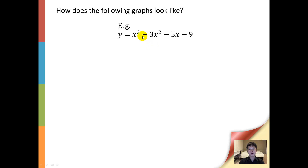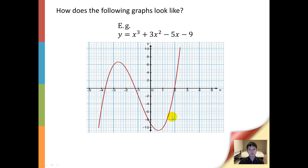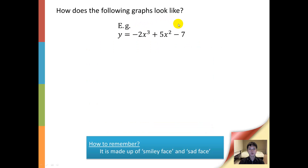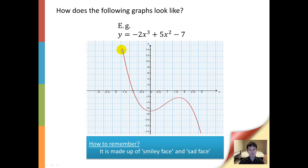Let's look at another type of cubic function — for example, y equals x cubed plus 3x squared minus 5x minus 9. After plotting, the curve will look like a sad face followed by a smiley face. For the next cubic curve with positive leading coefficient, we get a smiley face followed by a sad face. A cubic curve will always have two turning points.